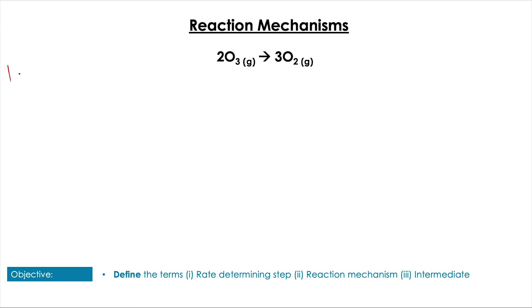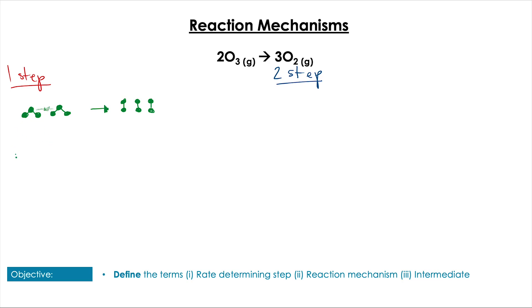Let's take the breakdown of ozone in both a one-step and two-step process. If we make this a one-step process, it must equal the overall reaction: two molecules of ozone collide and in one step form three molecules of O2. This has an overall rate equation of rate equals K[O3]² because there are two molecules of ozone involved in the rate determining step — so this is a bimolecular process.